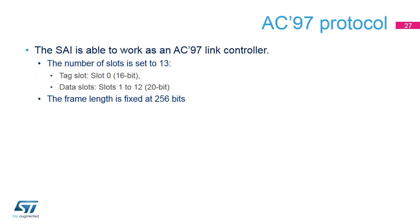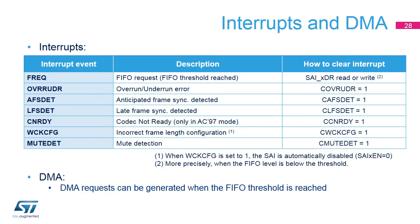The SAI is able to work as an AC97 link controller. When this protocol is used, the frame length, slot number, and slot length are set by the hardware. Several events can be enabled in order to generate interrupts. The WCK-CFG event can be used to inform the user that the frame length of the SAI has been improperly programmed. This feature only makes sense in master mode.